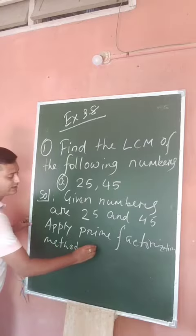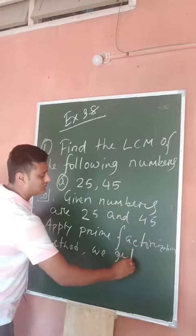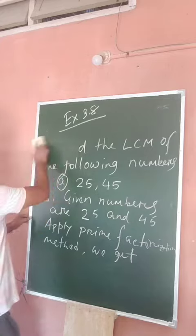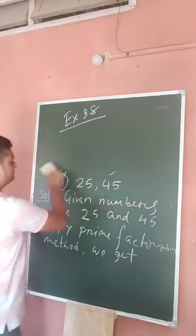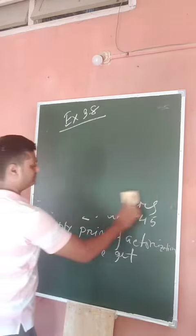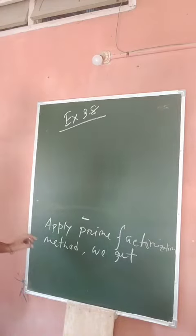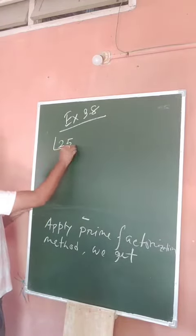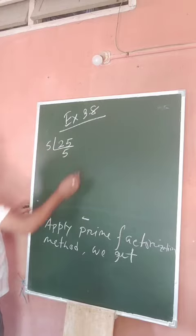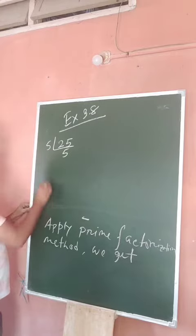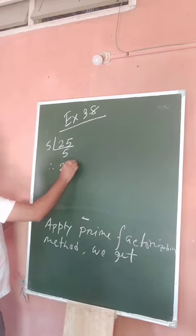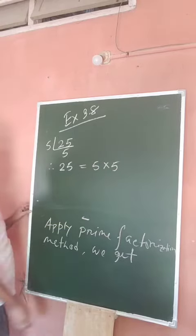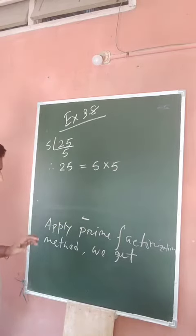We get: on 25, we have a factor of 5 into 5. Therefore, 25 equals 5 into 5.